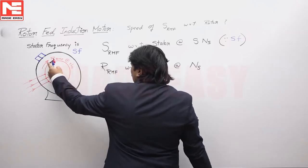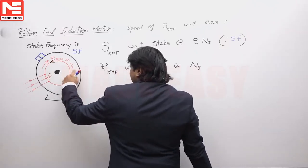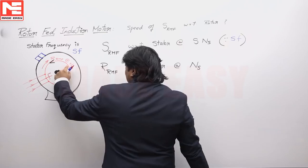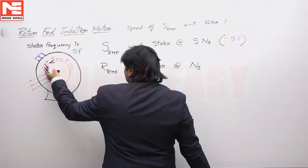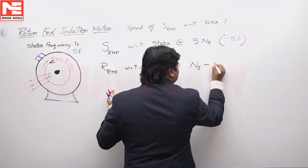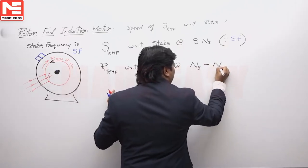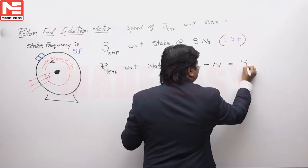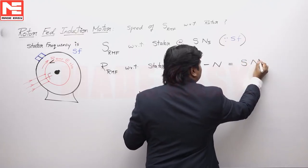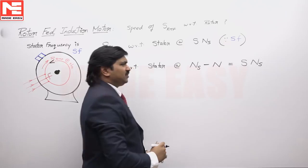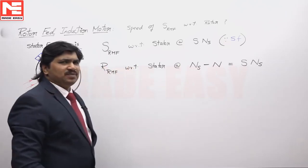If the rotor were stationary, the rotor RMF would be at NS. But the rotor is rotating in the opposite direction. So the rotor RMF with respect to a stationary point is NS minus N, which equals SNS.